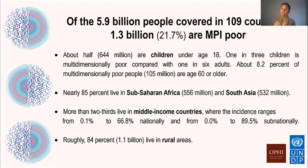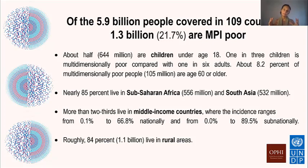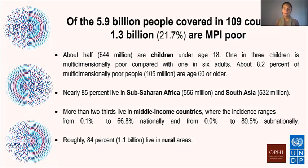About 105 million poor people are aged 60 or older — a key population during the pandemic. Of the 1.3 billion poor people, 85% live in sub-Saharan Africa and South Asia, and more than two-thirds live in middle-income countries, where poverty incidence ranges up to nearly 90% in subnational regions. And 84% live in rural areas.